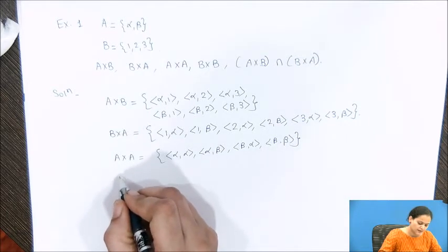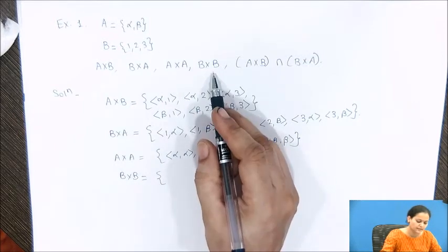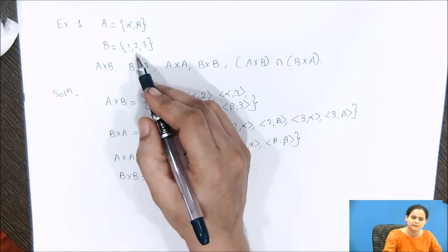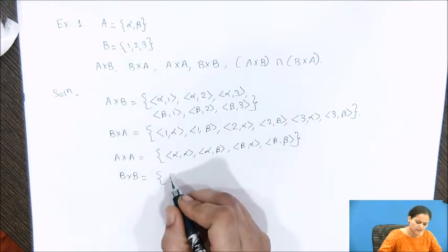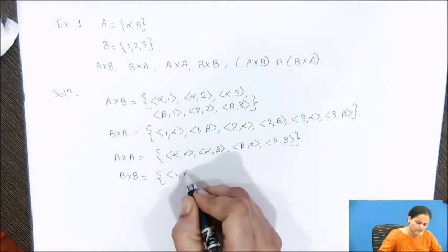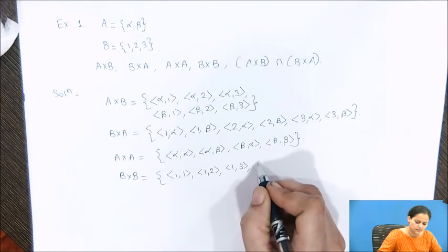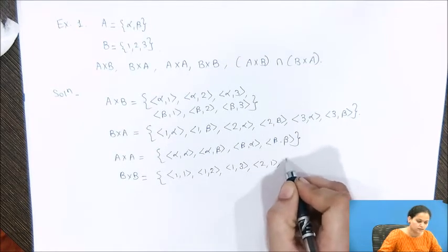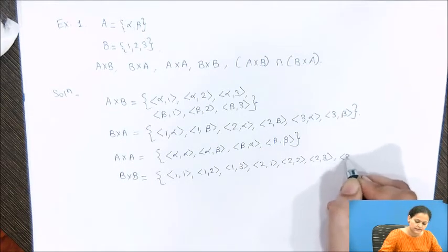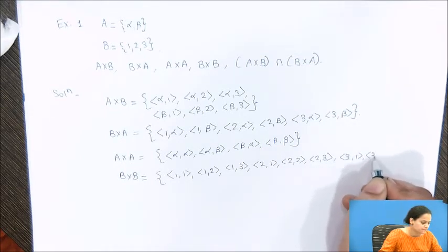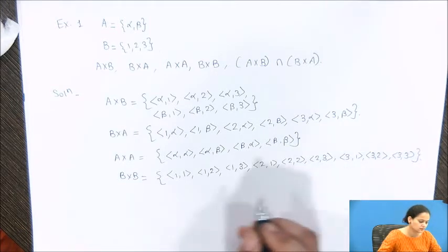The next part: B×B. We take set B = {1, 2, 3} and combine it with itself, resulting in (1,1), (1,2), (1,3), (2,1), (2,2), (2,3), (3,1), (3,2), and (3,3). So these are the ordered pairs in B×B.